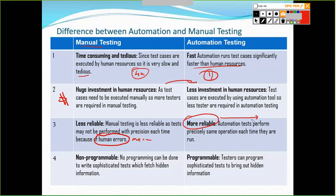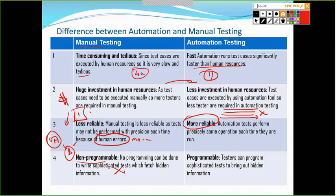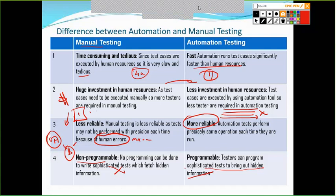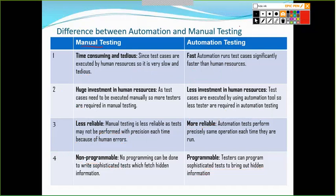Manual testing requires a huge investment of resources — more testers are required. Automation is more reliable because once you tell the script to do something, every time it will do the same thing without missing a step. Manual testing is less reliable because of the possibility of human errors. Automation is also programmable — you can bring out hidden back-end data information that you cannot access manually.